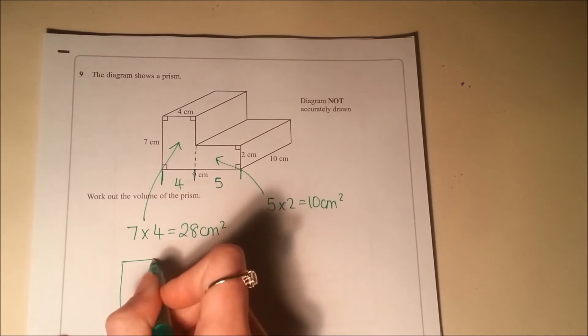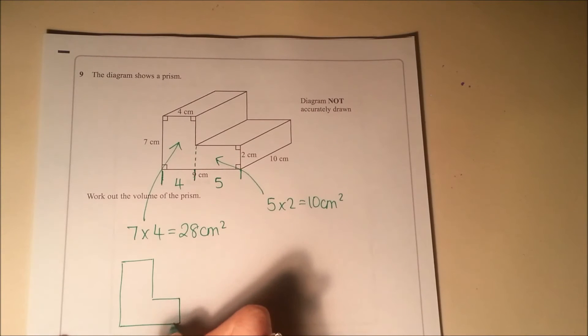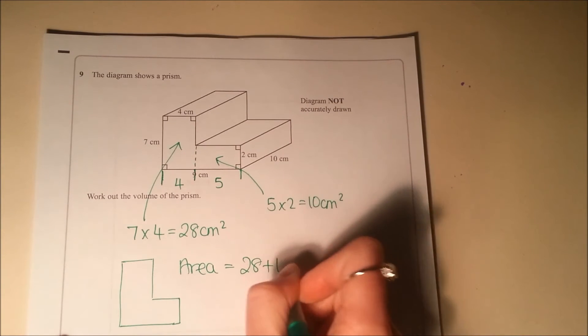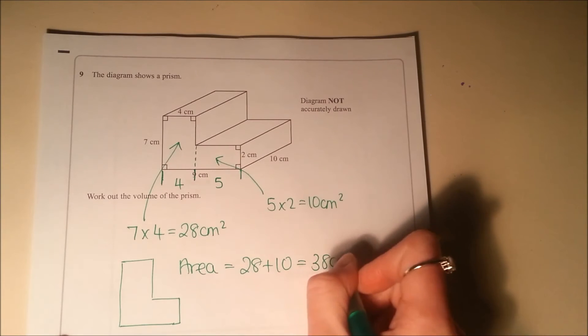So the total area of that L shape is 28 plus 10, so it's 38 centimetres squared.